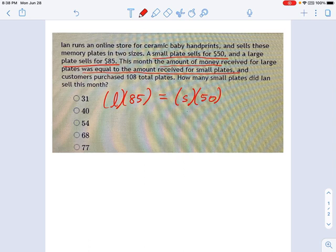And we need another equation, because you can see there's two variables, L and S. And if I have two variables, I need two equations. So what else do I have in this? Let's take a look. Keep on reading. Customers purchased 108 total plates. What that means is the number of large plates plus the number of small plates equals 108.